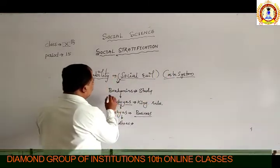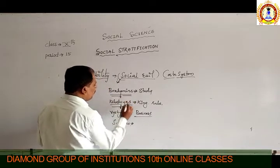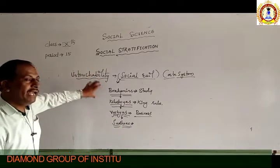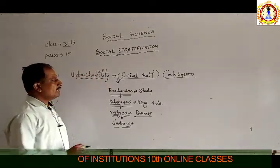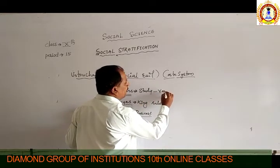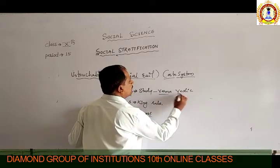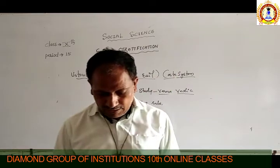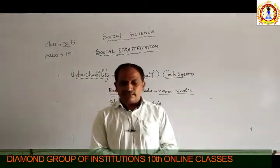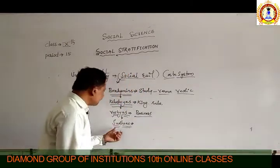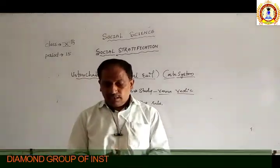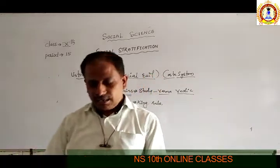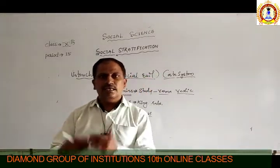They are going to do their particular work on the basis of their roles. This was the base for the starting of untouchability, which began due to the Varna system in the Vedic period — the base for the starting of a social evil. The fifth group, after the Shudras, were considered as the untouchables, belonging to untouchability. These human beings are called the untouchables.